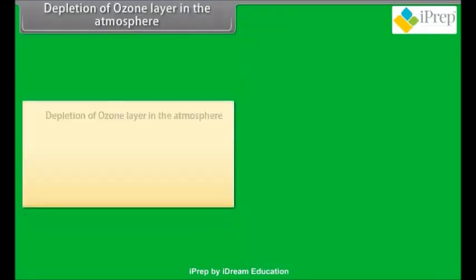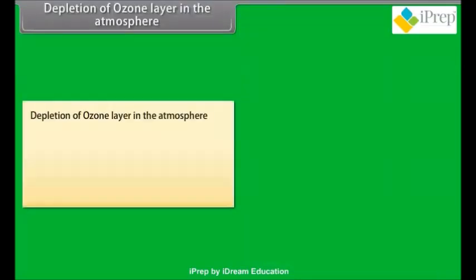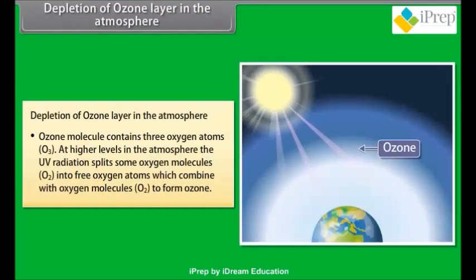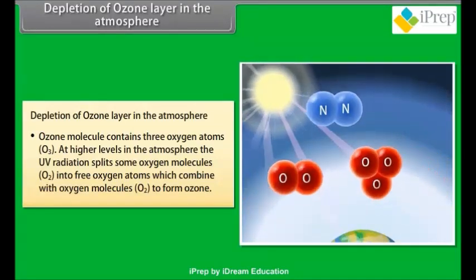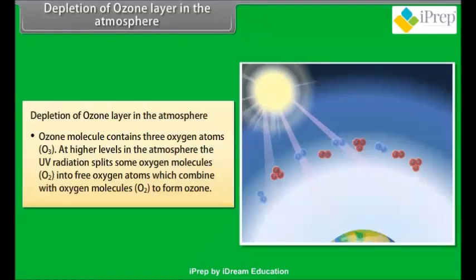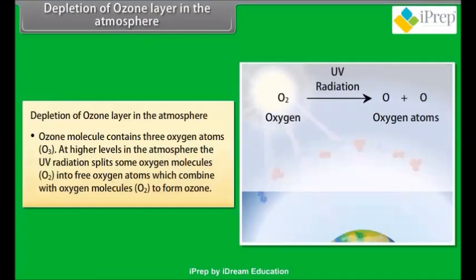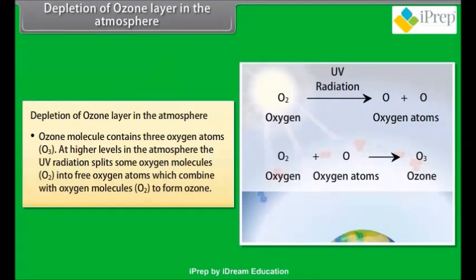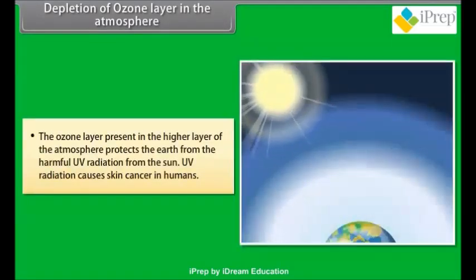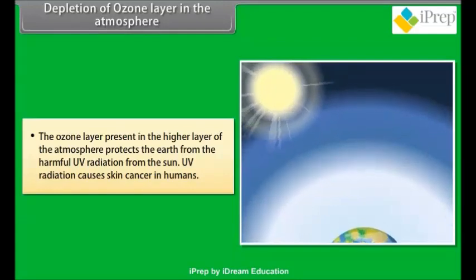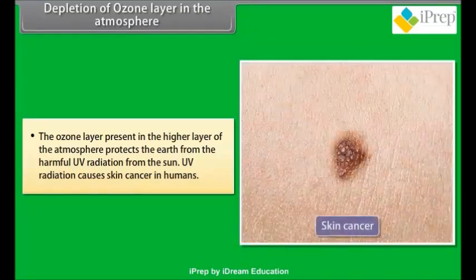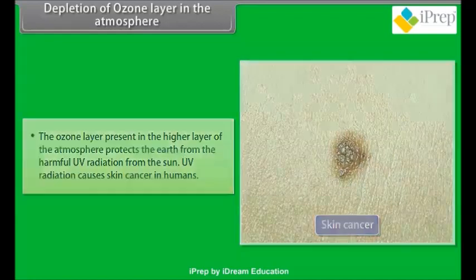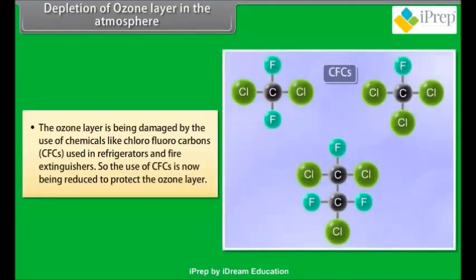The ozone molecule contains three oxygen atoms (O3). At higher levels in the atmosphere, UV radiation splits some oxygen molecules (O2) into free oxygen atoms, which combine with O2 to form ozone. The ozone layer present in the higher atmosphere protects the earth from harmful UV radiation from the sun. UV radiation causes skin cancer in humans.